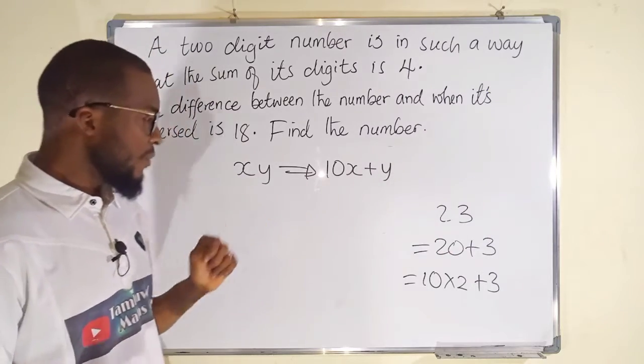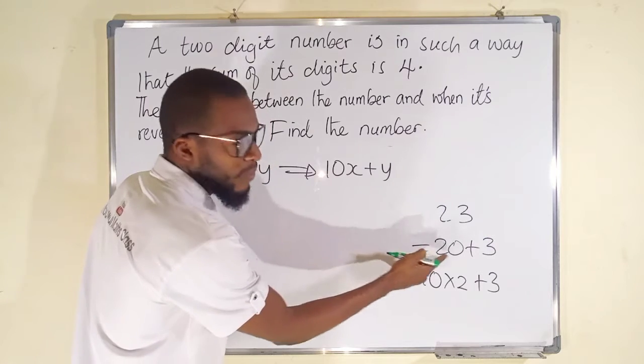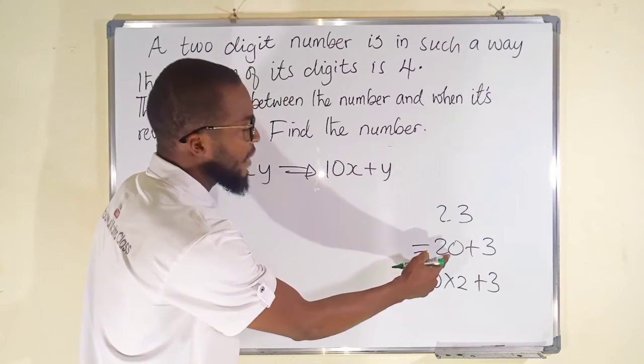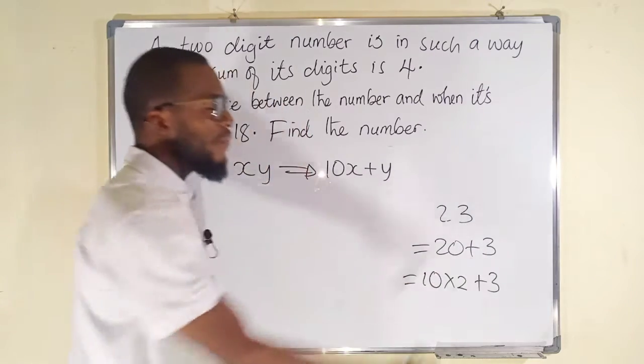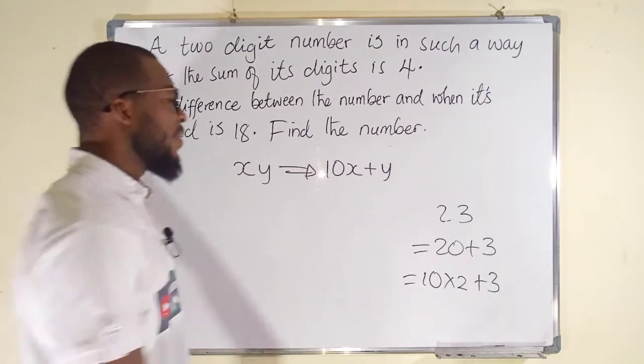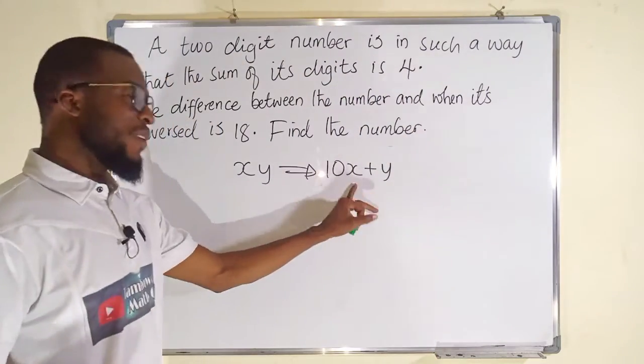So if we should relate XY with 23, where X is 2 and Y is 3, you can see that X is 2 multiplied by 10, it will give us 20, and Y is still 3. Joining them together we have 23.